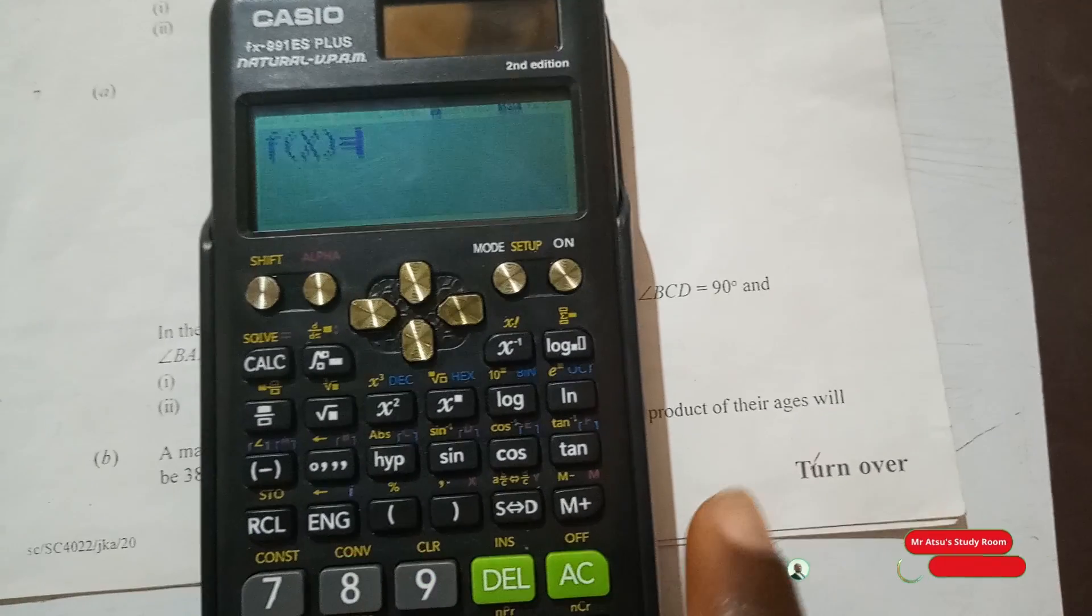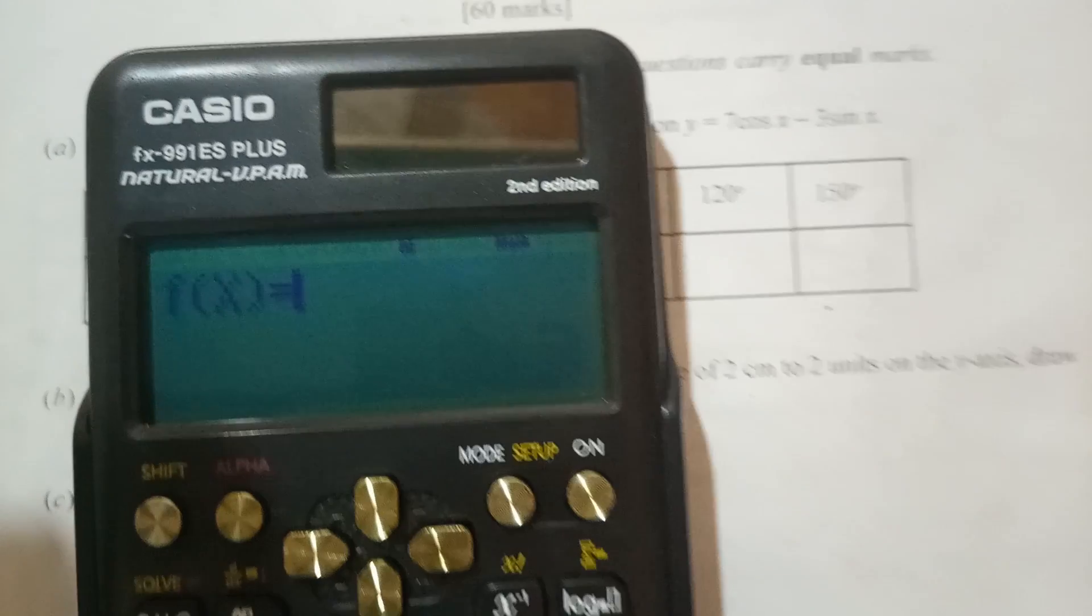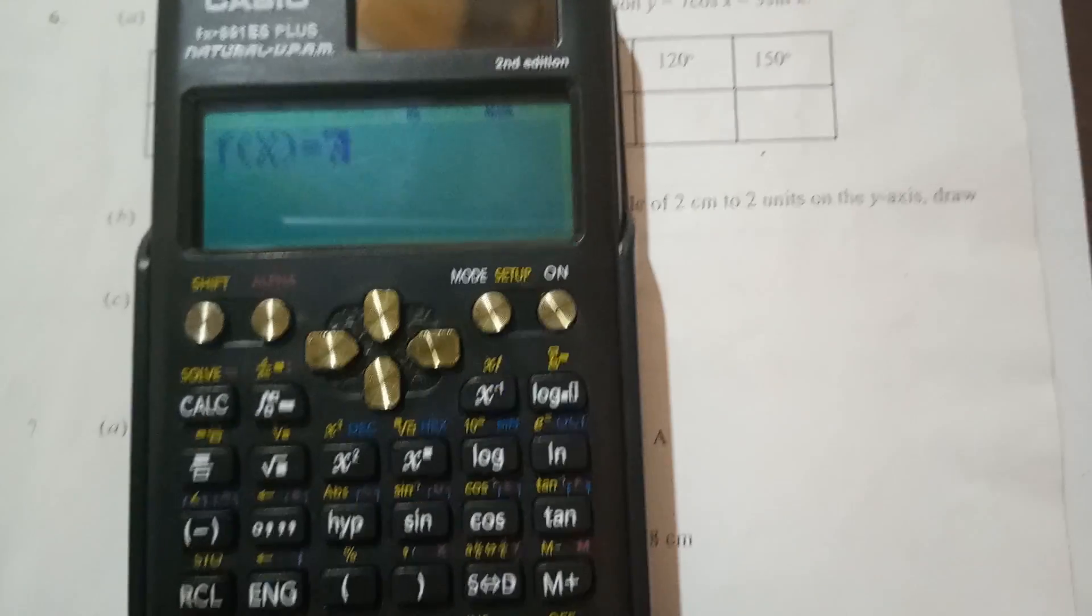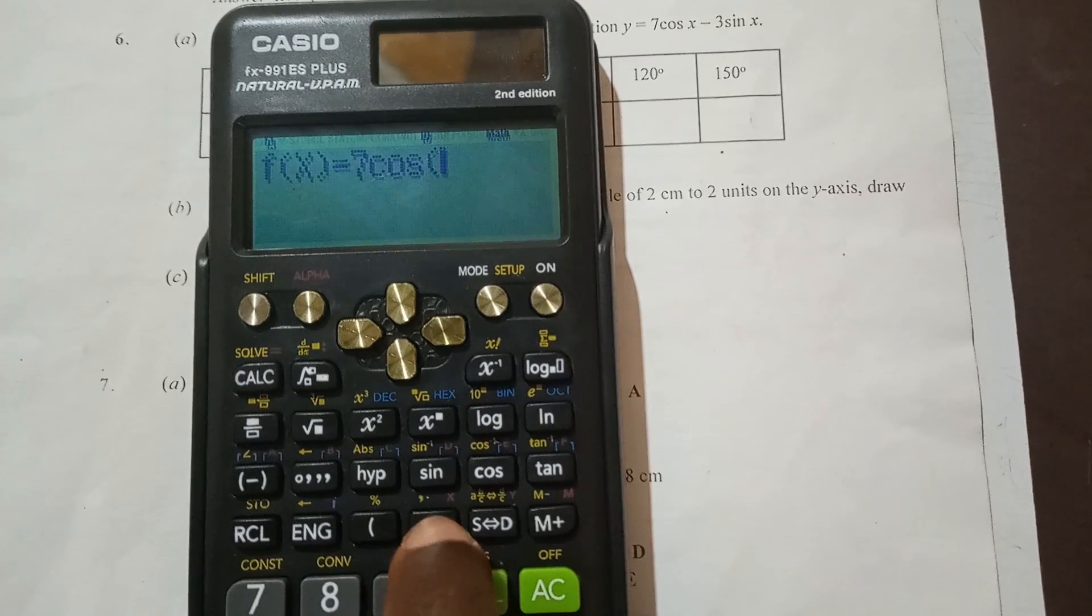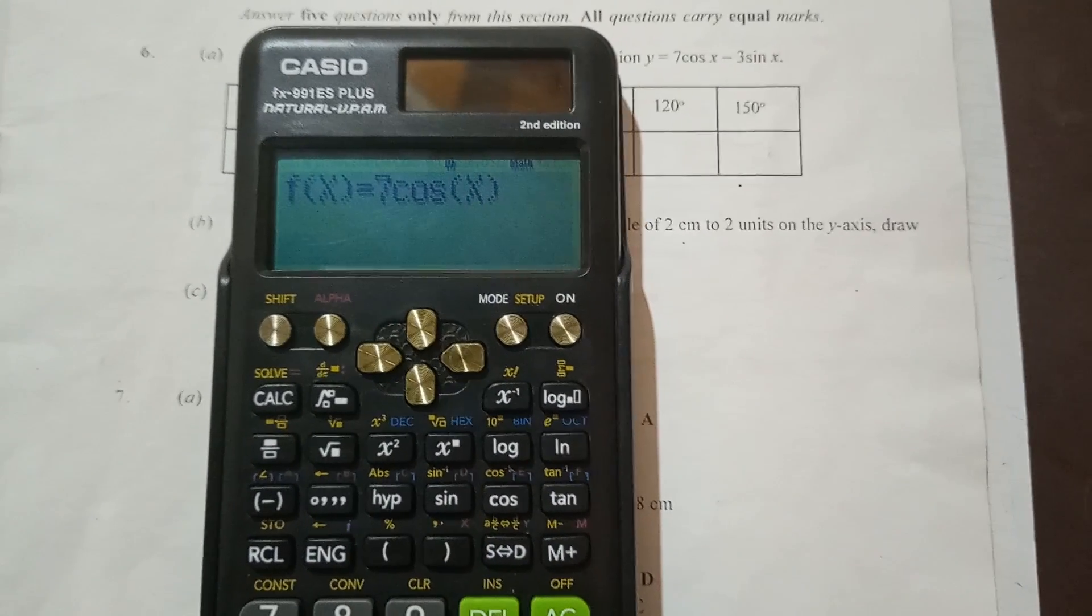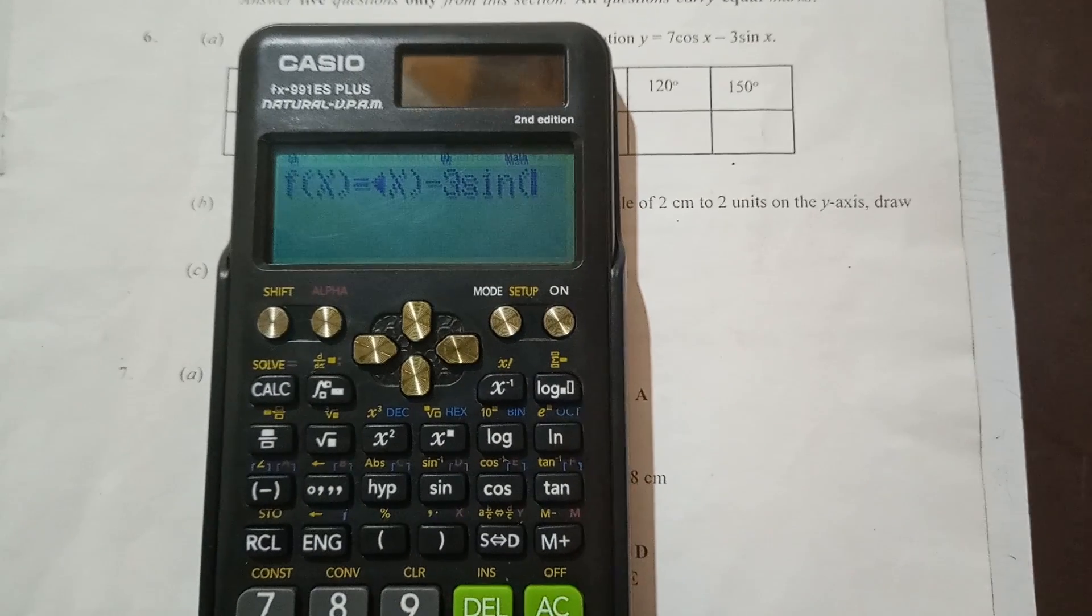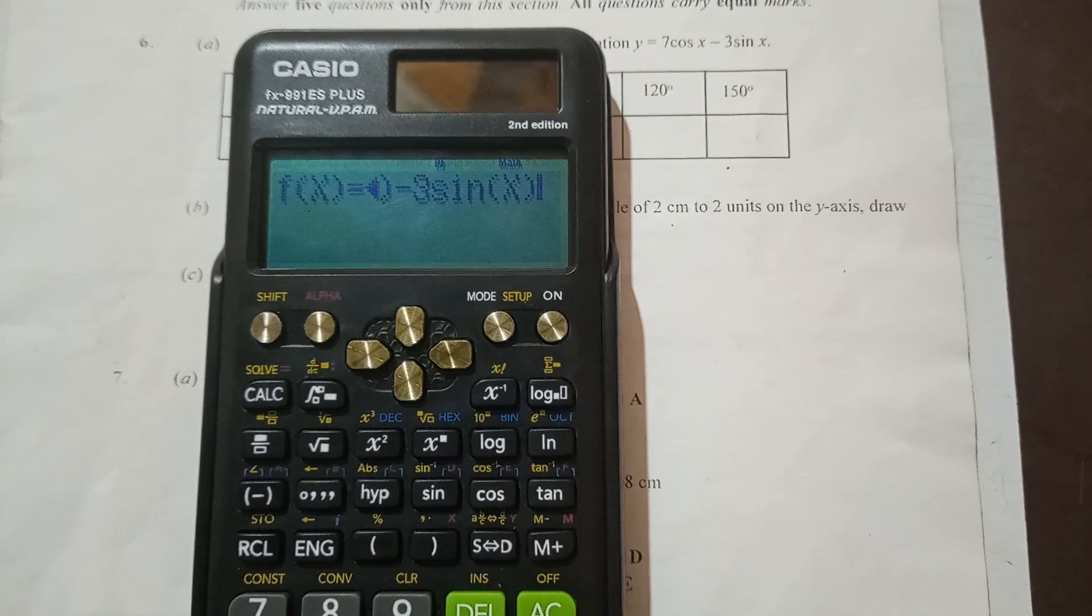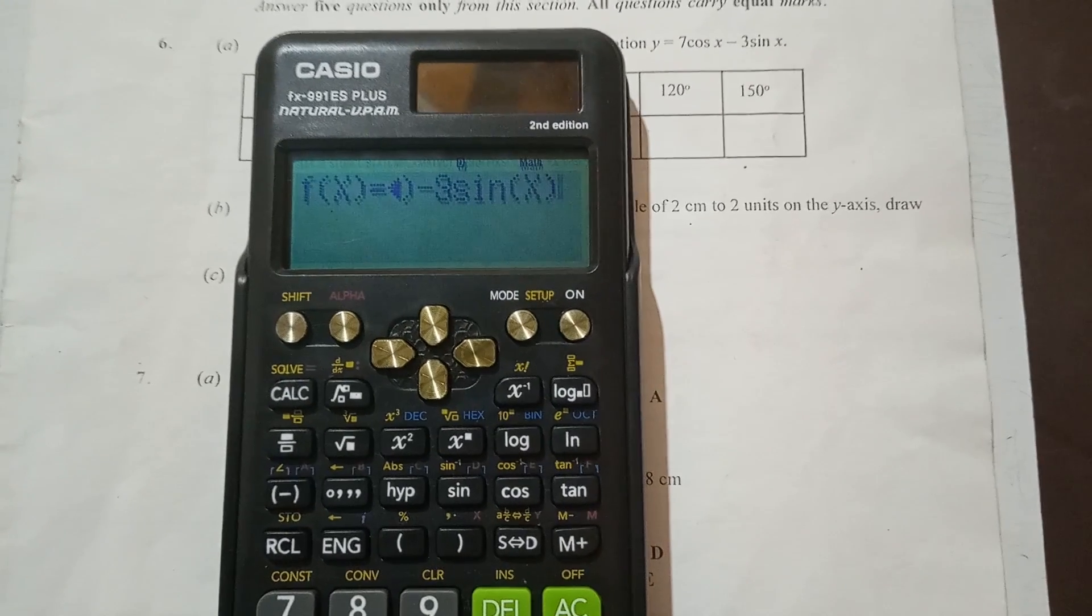So that is the same as the y. Now we are going to enter this relation: y equals 7 cos x. So you just enter 7, then you press cos, then x. So alpha x, which is a closing parenthesis. Then make sure you close the parenthesis. So 7 cos x minus 3 sine. Remember any time you want to type x, you press alpha key, then x. Then you close the parenthesis now. So this is our relation: 7 cos x minus 3 sine x. So you press equal to.